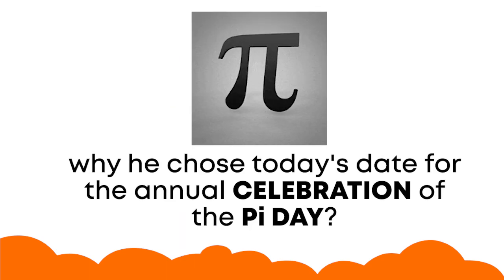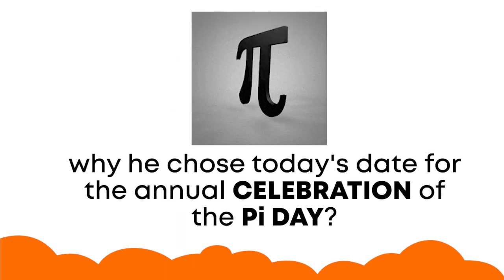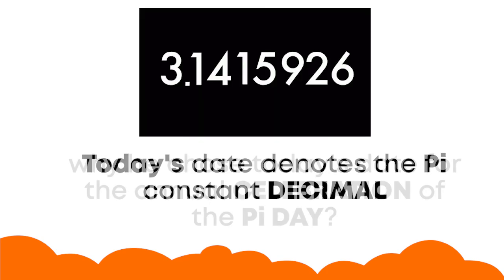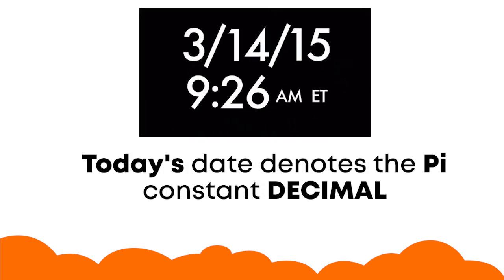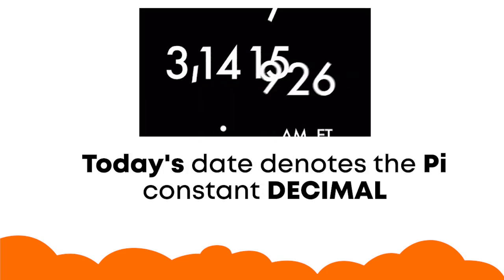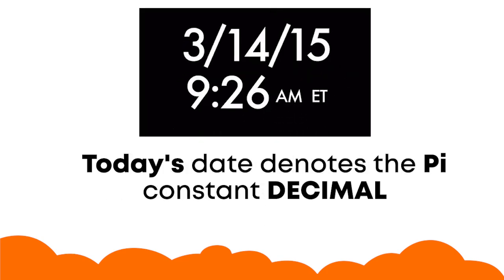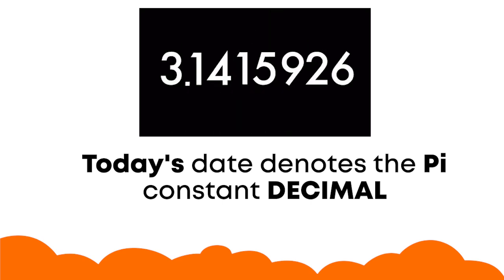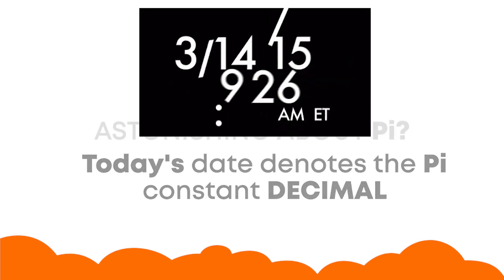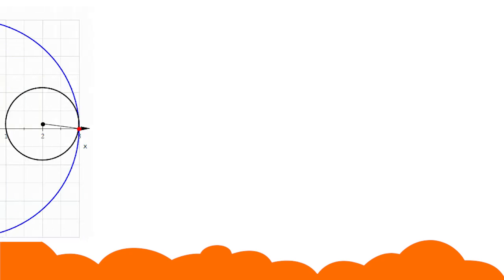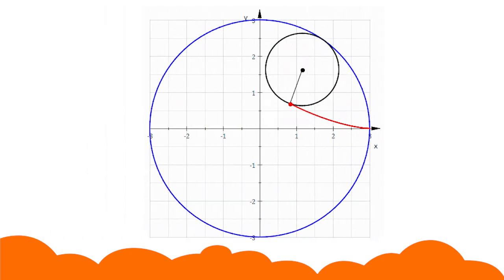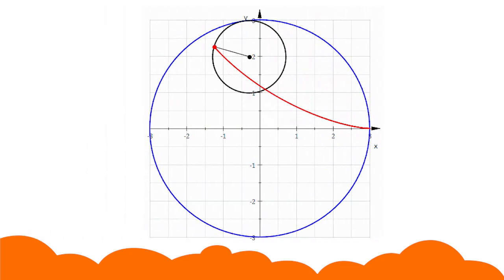Do you know why he chose today's date for the annual celebration of Pi Day? That's because today's date denotes pi's constant decimal — 3.14. What's further astonishing about pi is that no matter how big or small the circle is, pi is always constant.